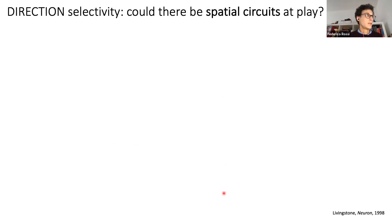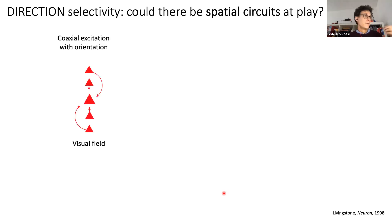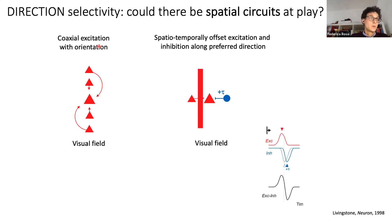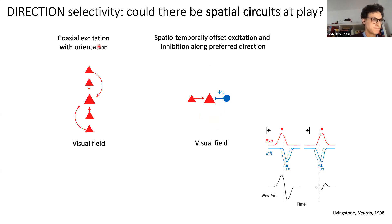What can generate direction tuning? We reasoned that direction tuning could arise from the spatial arrangement of inputs in visual space. For orientation tuning, excitatory inputs aligned co-axially with the preferred orientation would trigger maximum response. For direction tuning, spatially offset excitatory and inhibitory inputs along the preferred direction — with inhibitory inputs delayed in time relative to excitatory inputs — would mean a bar sweeping in the preferred direction triggers excitation first, giving a good postsynaptic response, while a bar in the opposite direction triggers inhibition first, suppressing the response. These spatial models have been proposed before and actually explain retinal direction selectivity, but haven't been demonstrated in cortex.